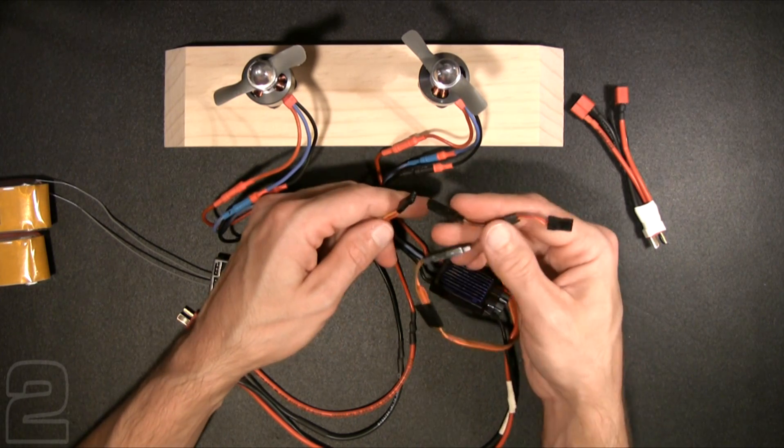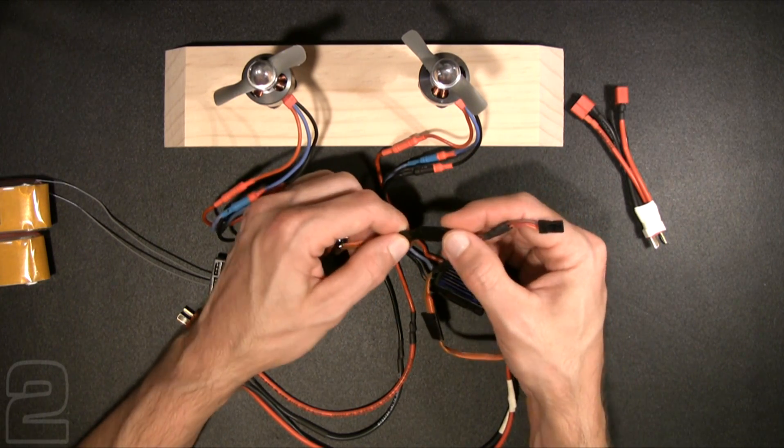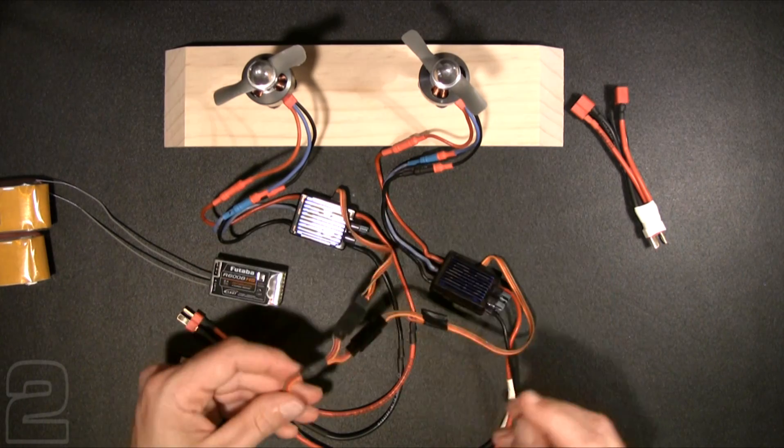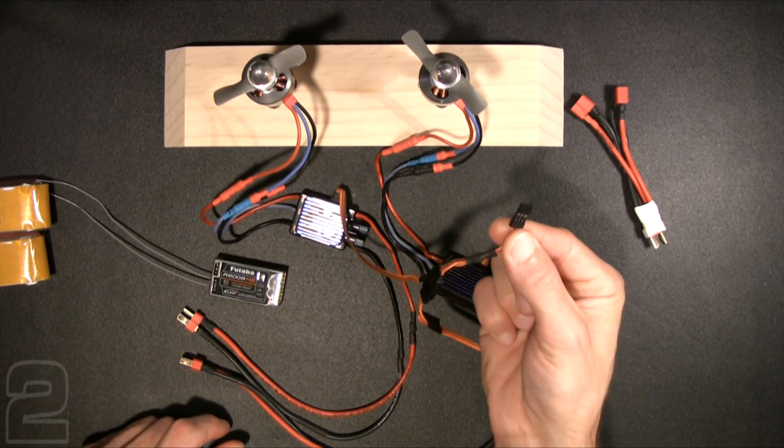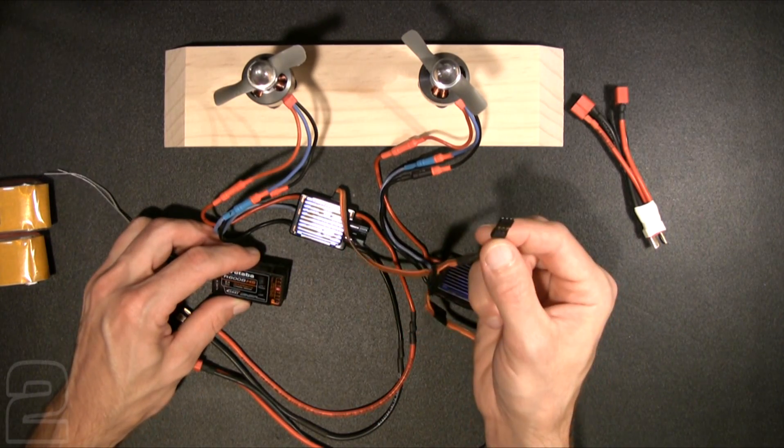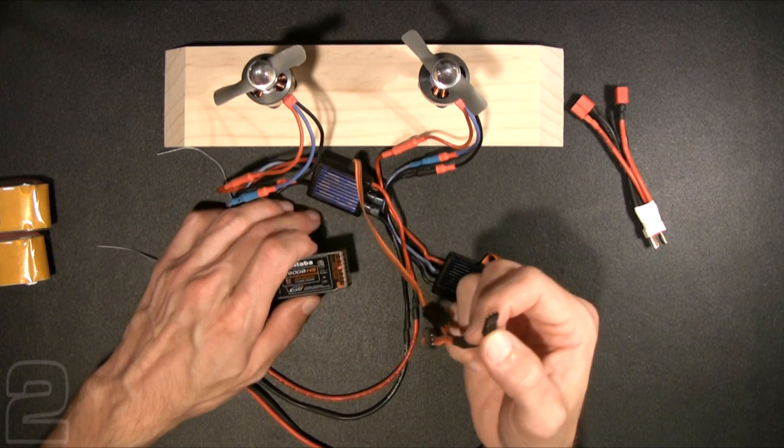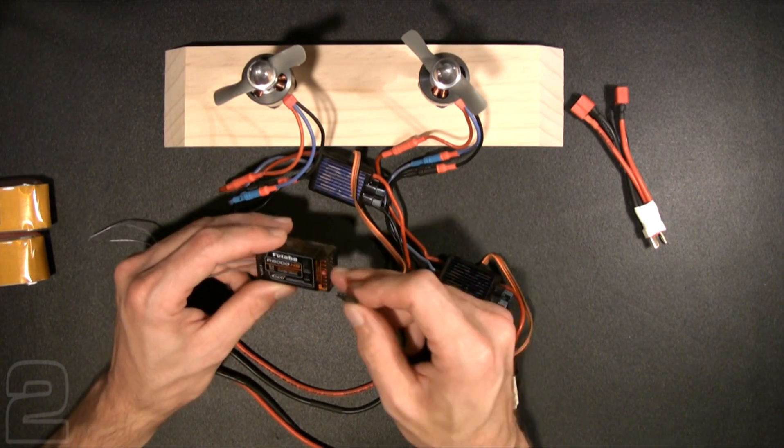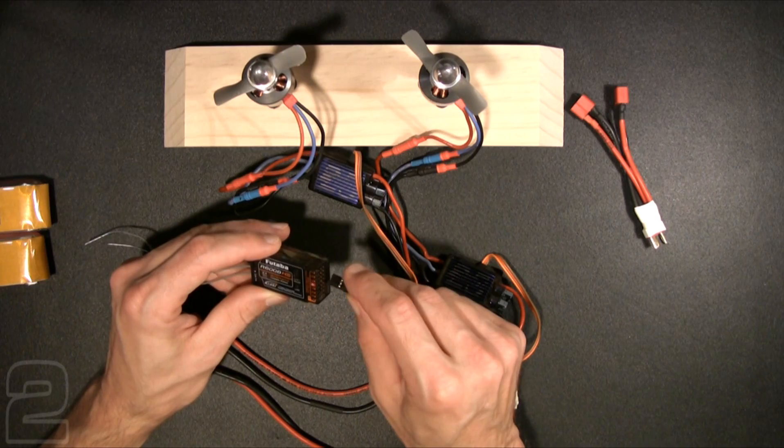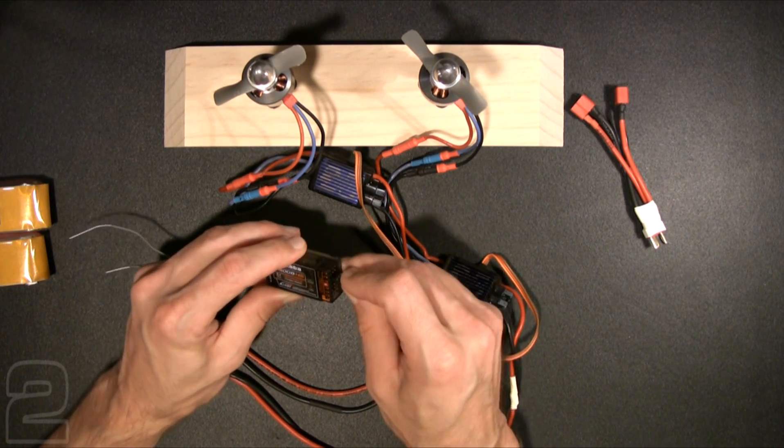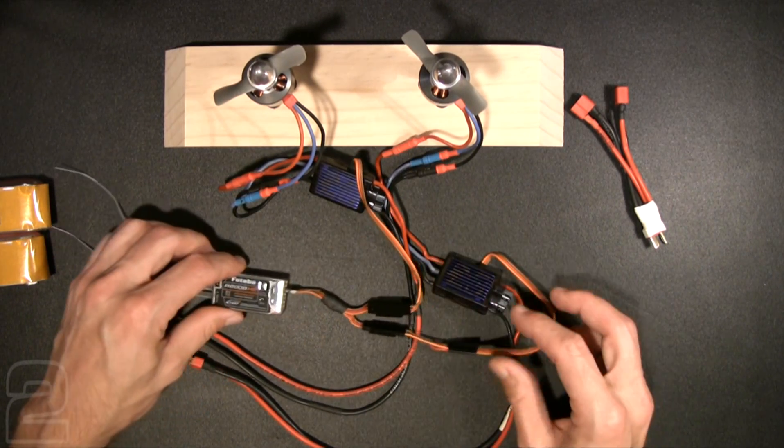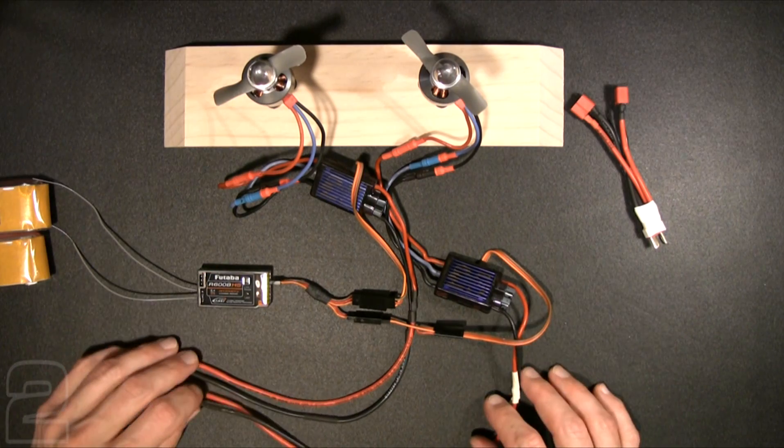So now we have one connection there, another connection there. And now we have a single connection then coming off our Y adapter that you treat like a single ESC connection or single engine setup. You just take that straight to the motor connection, the motor channel on your radio receiver.